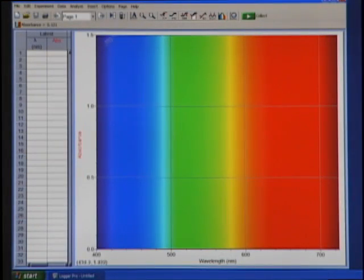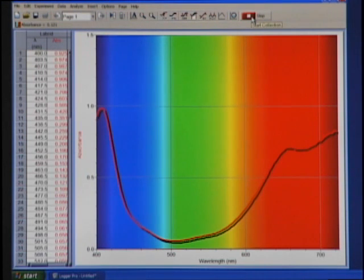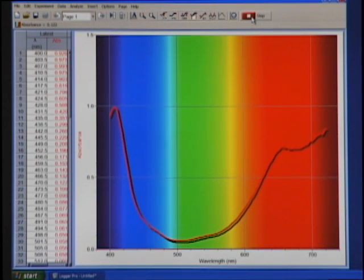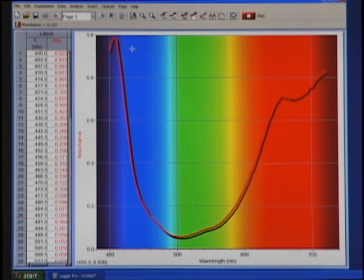We're already in the full spectrum mode, absorbance versus wavelength, so I'm going to go ahead and click on Collect. When I do that, in less than a second I have a full spectrum, and I'm going to click on Autoscale just to fill up that graph, fill the graph axes a little bit better, and I'm going to go ahead and click on Stop.